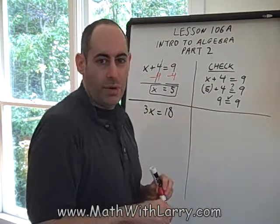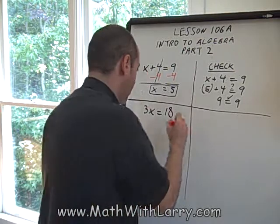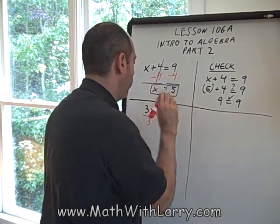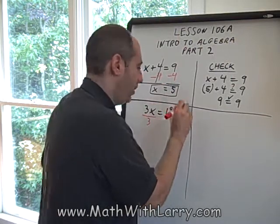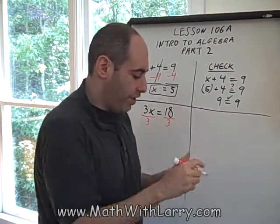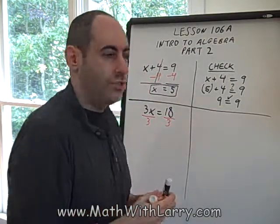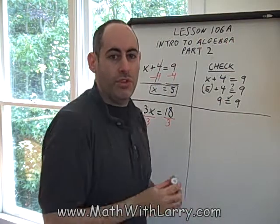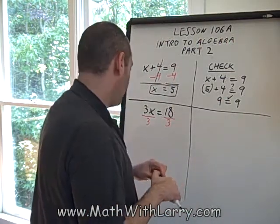So to undo multiplying by 3, we're going to divide by 3. So we're going to divide by 3 here, and always, without even thinking, do the same thing on the right. Whatever you do to the left, you must always do to the right to keep the equation in balance. Don't even think about it. The moment you do something on the left, immediately do the same thing on the right.